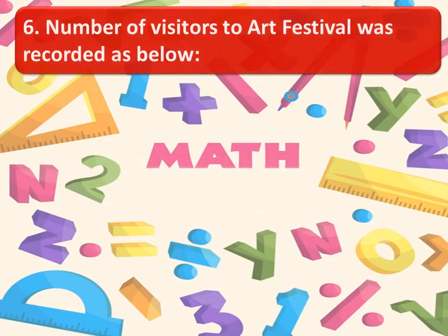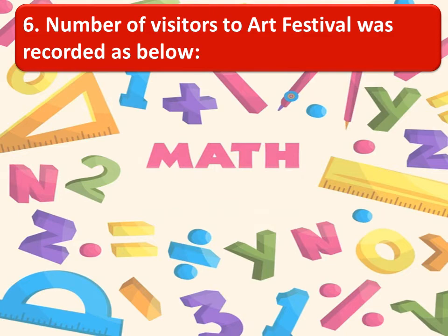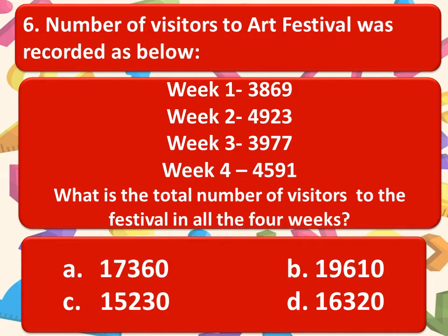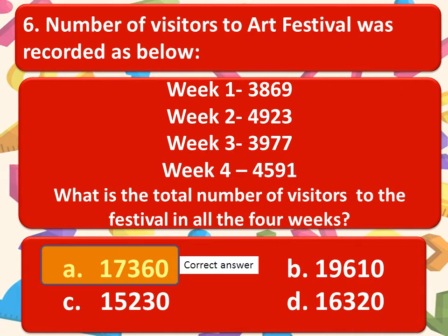And the next one is number of visitors to the art festival was recorded as below. Week 1, 3869. Week 2, 4923. Week 3, 3977. Week 4, 4591. What is the total number of visitors to the festival in all the four weeks? Here are the options. Choose the correct option. And the correct answer is option A.